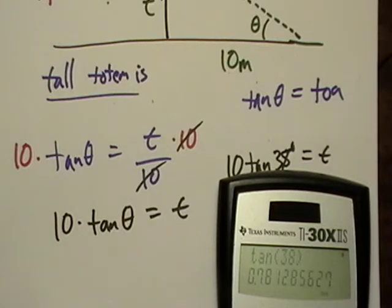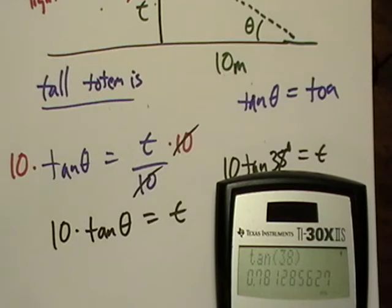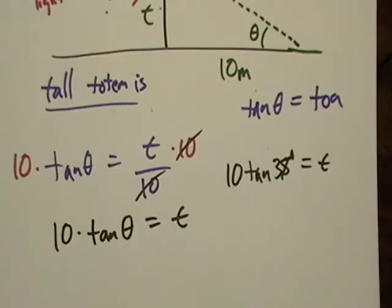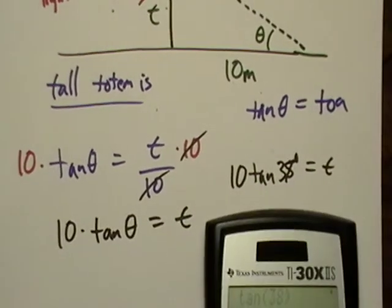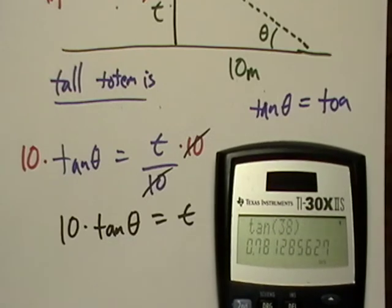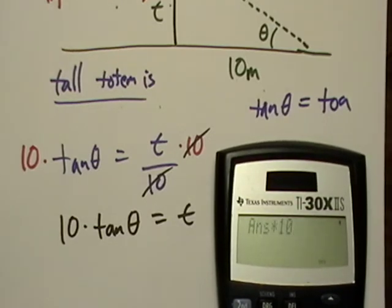0.78? Let's call it 0.78. It's a real weird number, but let's just call it 0.78. Oh, but hang on. That's just tangent of 38. We're going to multiply it by 10, don't we? 7.8.